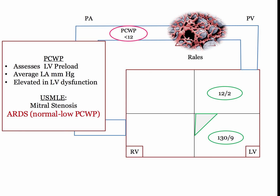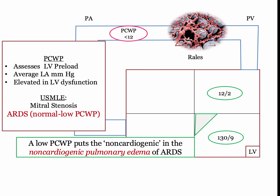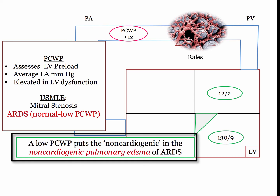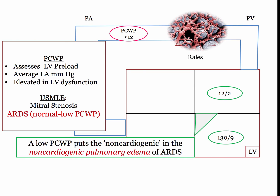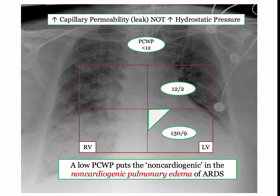The pulmonary capillary wedge pressure also appears in ARDS, referred to as non-cardiogenic pulmonary edema. Pulmonary edema is present due to capillary leak, not elevated left ventricular pressures. Consequently, the pulmonary capillary wedge pressure is low or normal — the low wedge pressure puts the non-cardiogenic in non-cardiogenic pulmonary edema. They may ask you to choose the correct wedge pressure, or give you the wedge pressure and ask you to identify the underlying disorder such as ARDS, or the pathogenic mechanism such as capillary leak secondary to inflammatory mediators.